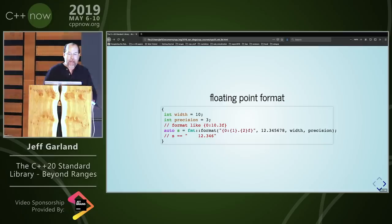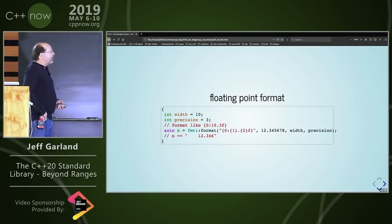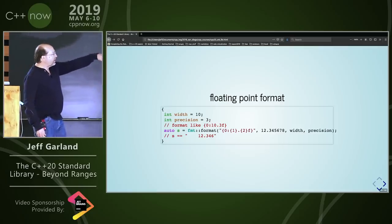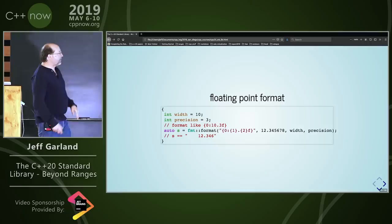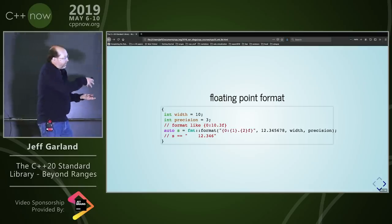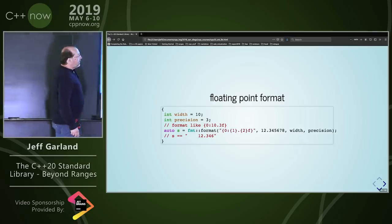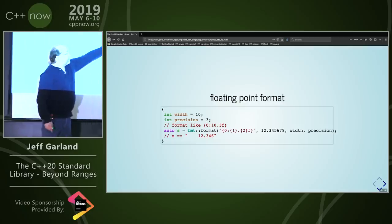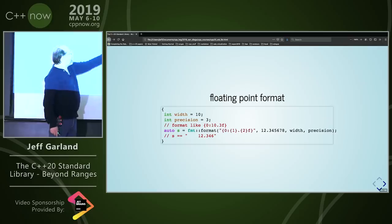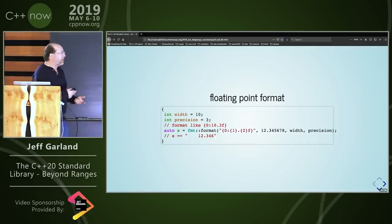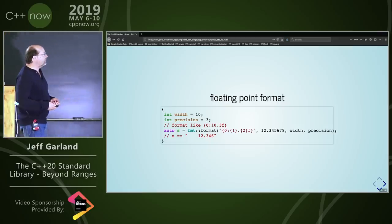Here's one numeric formatting example. Notice we have a width and a precision — a floating point number where we want something like 10.3f. You'll notice we're actually influencing the internals of the format string by passing parameters in. There are three indexed parameters — 0, 1, and 2 — and the colon separates the format spec. So you get 10.3f. You have very sophisticated capabilities to generate the format string dynamically, even within the syntax itself.